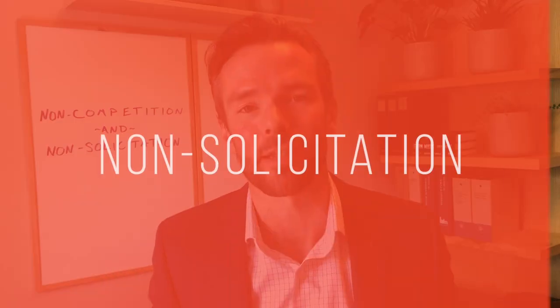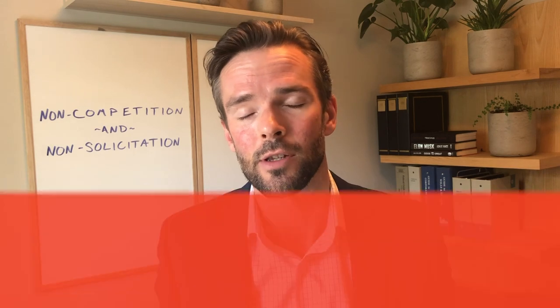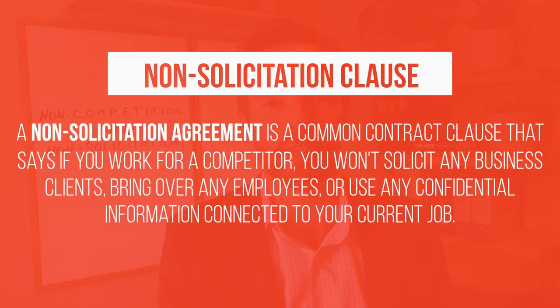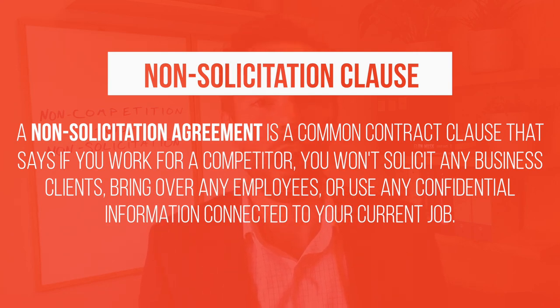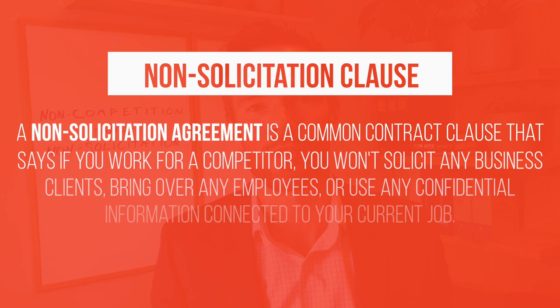However, what's easier to enforce is what's called a non-solicitation clause. These clauses work similarly to non-competition clauses. The drafting would look something like: for the term of the employee's engagement with the company and for a period of time thereafter — usually six months to a year, although this could be up to two or even three years — the employee is prohibited from soliciting the company's customers, its clients, its suppliers, other employees, and other contractors. In essence, it's saying this employee cannot poach the contacts of the business.